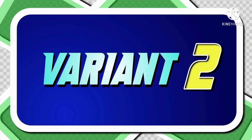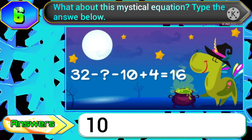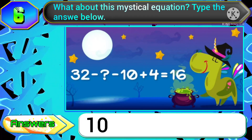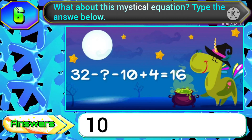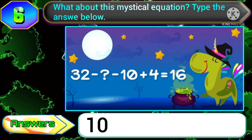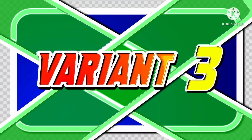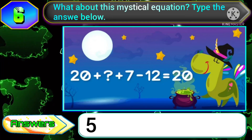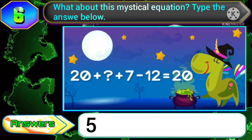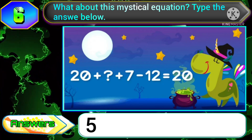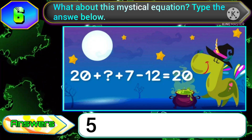In variant two of this question, if the mathematical equation comes as 32 minus question mark minus 10 plus 4 equals 16, then the answer of the question mark will be 10. In variant three, if the equation comes as 20 plus question mark plus 7 minus 12 equals 20, then the answer of the question mark will be 5.